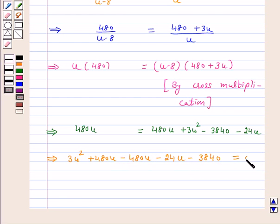On solving this we get 3u square minus 24u minus 3840 is equal to 0.